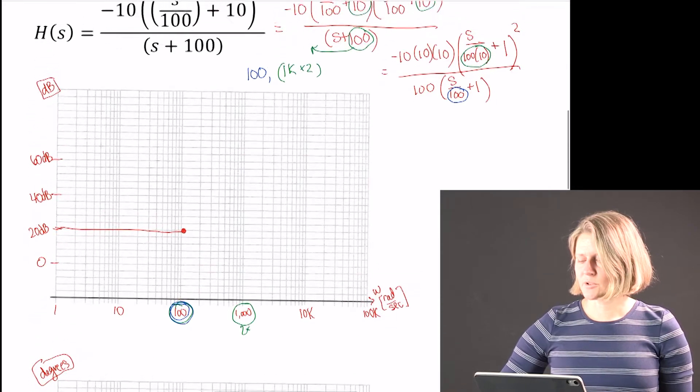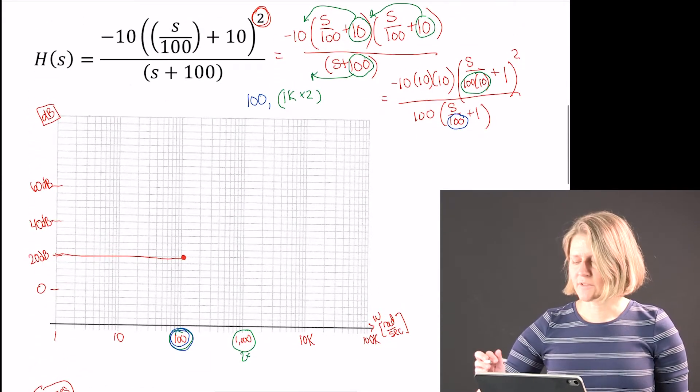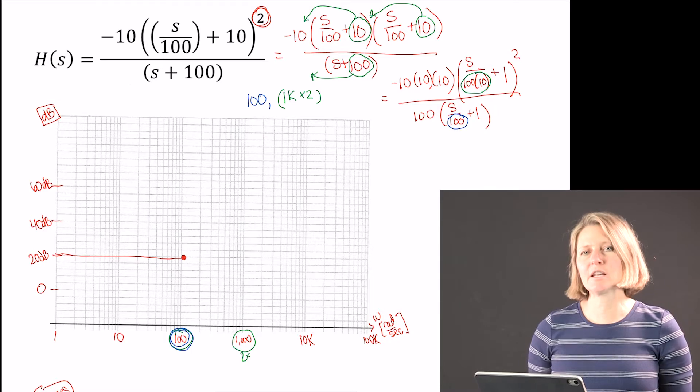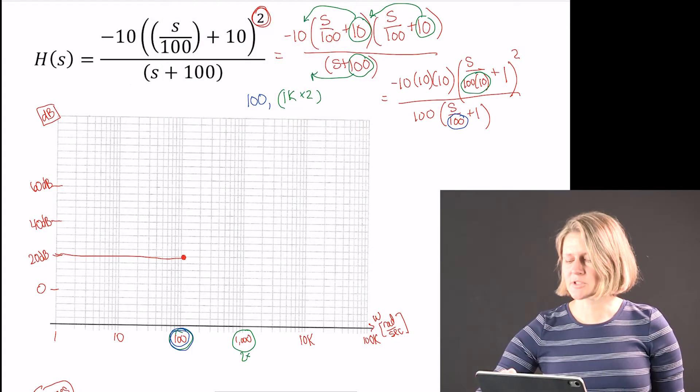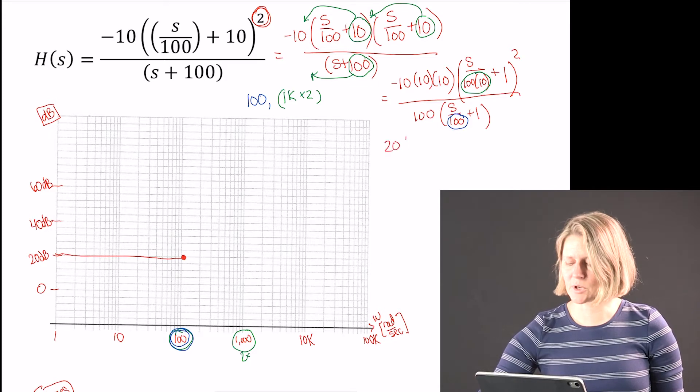So I also need to find out the starting value. I notice that I do not have any poles or zeros at the origin. So I'm going to just take the number that's out in front, 20 log of that number.